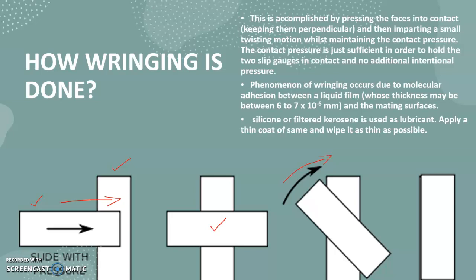After rotating it will look like this, so two will be stacked like this. By doing this we can have a bond between these two. Because of that, they will be sticking to each other. That is known as ringing. So now we can tell that these two slip gauges are wrung together.